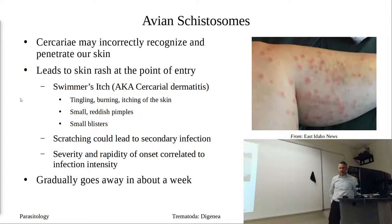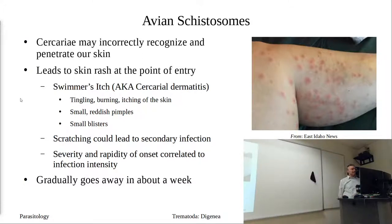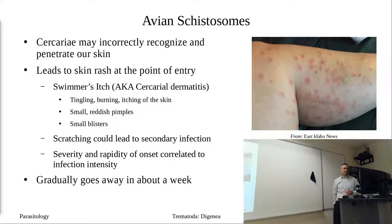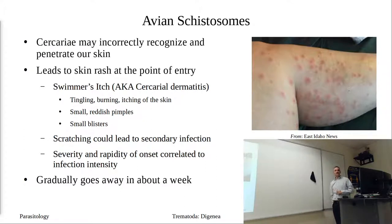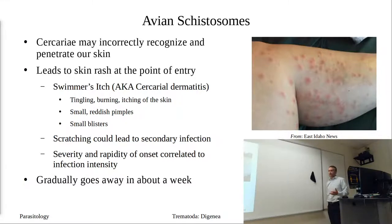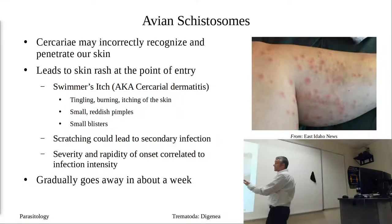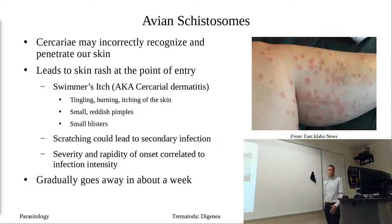The last bit is avian schistosomes. We can't end schistosomes without mentioning these avian forms. We're not going to talk about their life cycles in detail — they're similar — but we can accidentally be infected by some of these cercaria. The cercaria swim around in the lake until we disturb them and they penetrate into the skin, but that's it — they can't migrate the rest of the way since we're the wrong host.